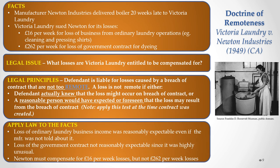When the court applied those legal principles to the facts, they concluded that the loss of ordinary laundry business income of £16 per week was reasonably expectable even if the manufacturer was not told about it, so Victoria Laundry will be compensated for that. The other conclusion was that the loss of the government contract of £262 per week was not reasonably expectable, since it was highly unusual and not something Victoria Laundry regularly had the opportunity to obtain. Therefore, the court ordered Newton to compensate Victoria Laundry for the £16 per week losses, but not for the £262 per week losses arising from the loss of the government contract.